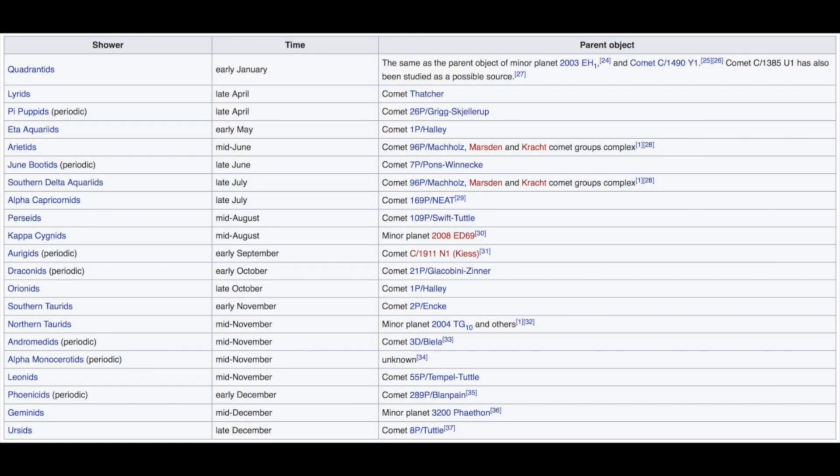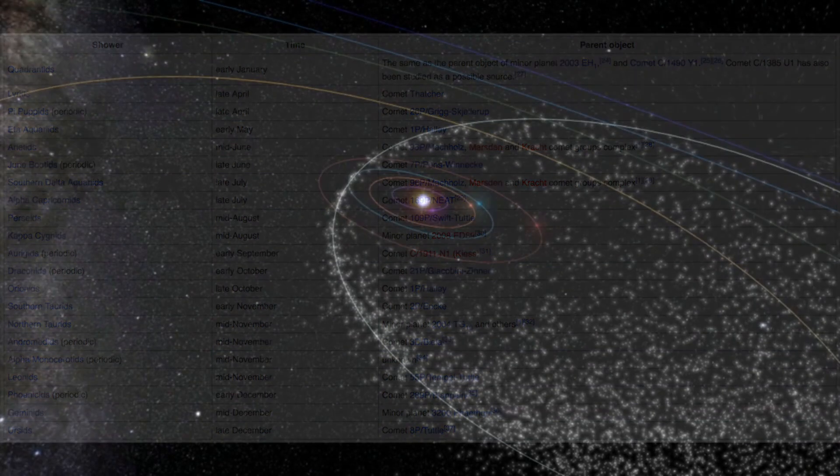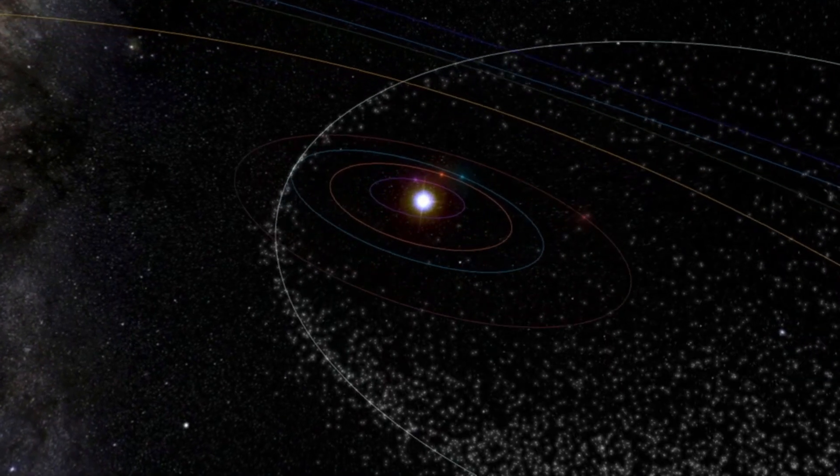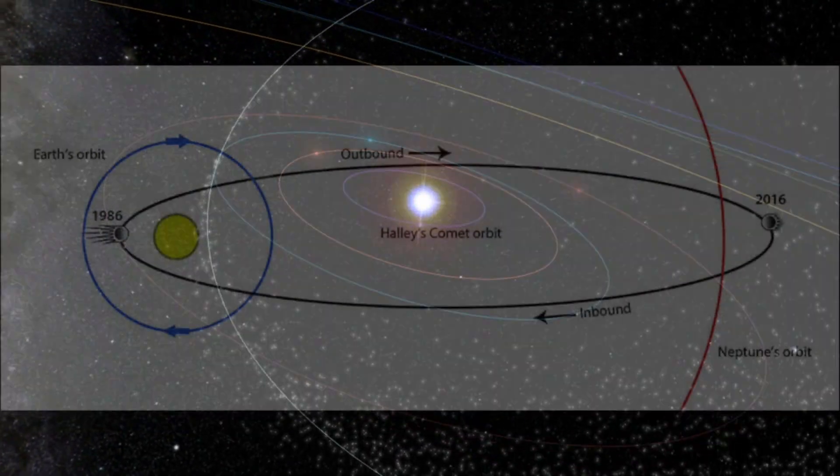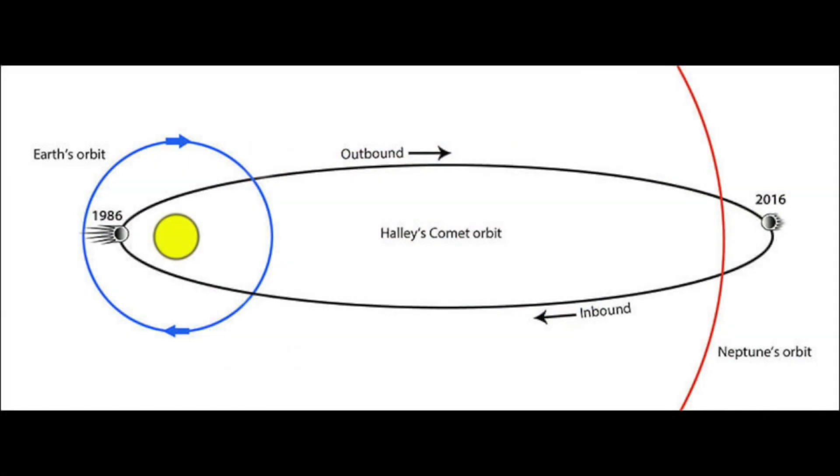By calculating the orbits of the comets that passed the Earth's plane, astronomers were even able to say which comets were the progenitors of each of these showers. Some comets' orbits are inclined to the Earth's plane, so we only catch one part of their path. While others, such as Halley's Comet, is the cause of both the Eta Aquarius and the Orionid meteor showers.